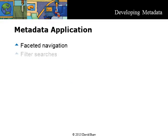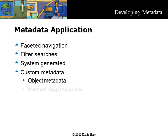Metadata can be applied to information in different ways. Facets are used for navigation or to filter and refine searches. System metadata, such as the file type and size, is generated by the system. Custom metadata — that is the metadata that you define — can be attached to information objects or to tags embedded in the object. Tag elements within an object are also metadata.